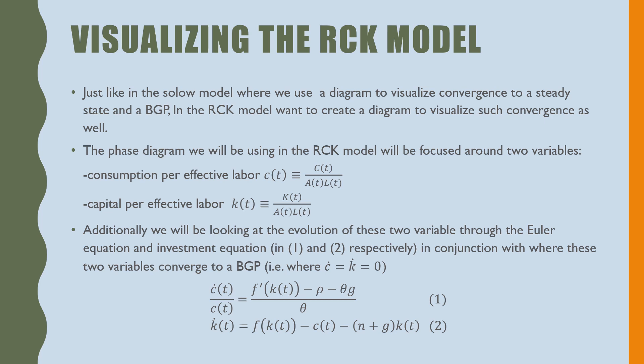Additionally, we'll be looking at the evolution of these two variables through the Euler equation and the investment equation, which is equation 1 and 2 respectively, in conjunction with how those variables converge to a BGP, which is where c dot is equal to k dot, which is equal to zero.